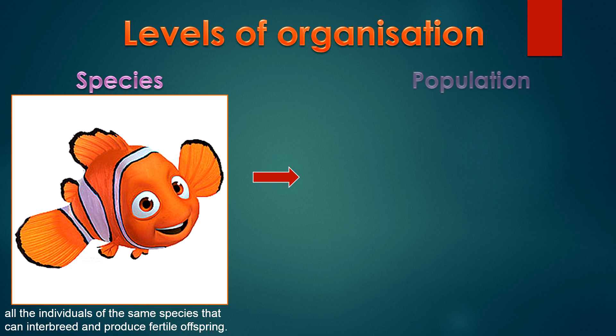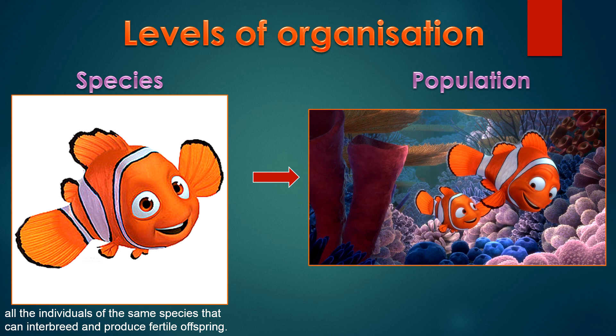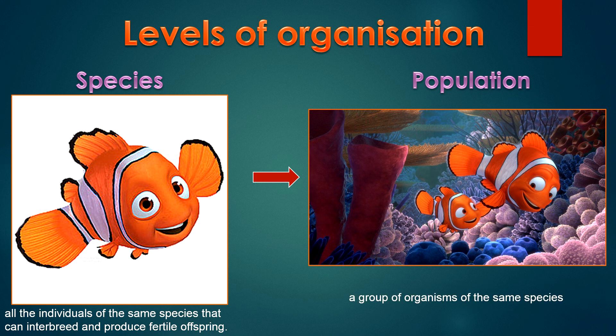The next category is Population. A population is a group of organisms of the same species. An example of this is Nemo and Marlin.